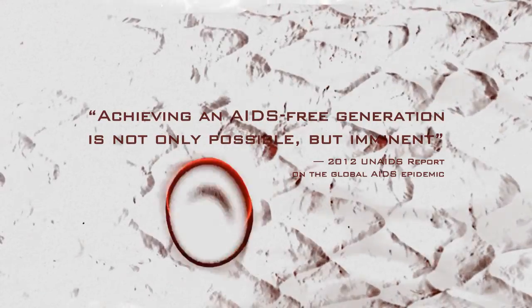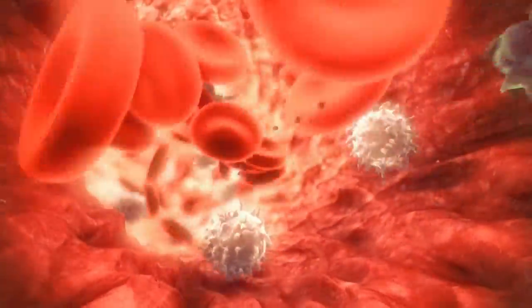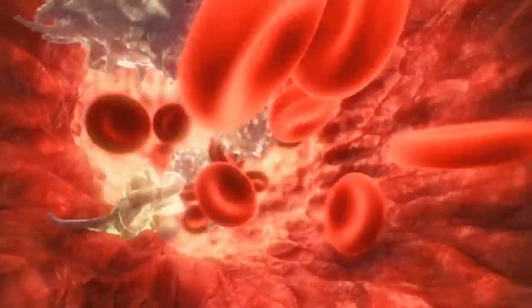Our blood contains trillions of cells. In a healthy individual, white blood cells number in the billions. They comprise our immune system.